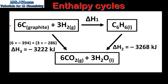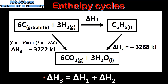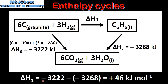According to Hess's law the enthalpy change for the reaction is independent of the route taken. So in equation form delta H3 is equal to delta H1 plus delta H2. If we rearrange the equation we get delta H1 equals delta H3 minus delta H2. This gives us delta H1 equals negative 3222 minus negative 3268, which gives us an enthalpy change for delta H1 of positive 46 kilojoules per mole, which is the enthalpy change of formation of benzene.